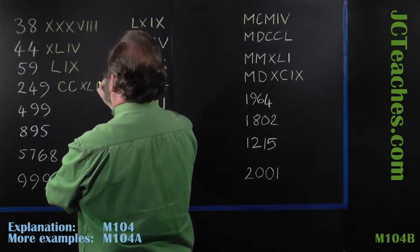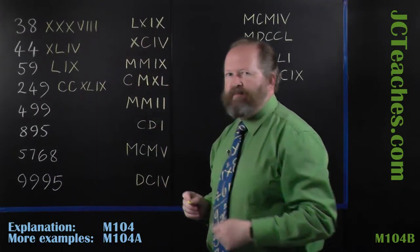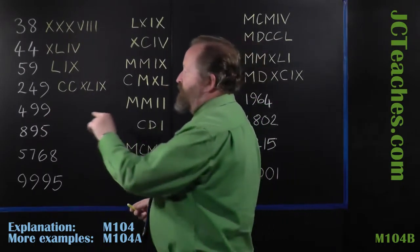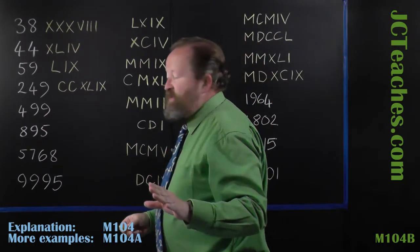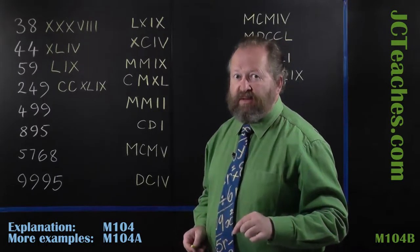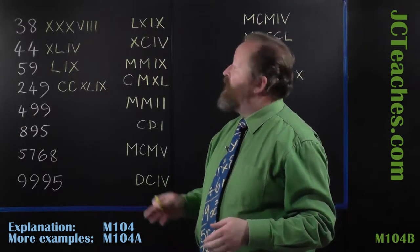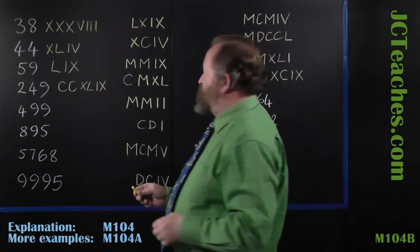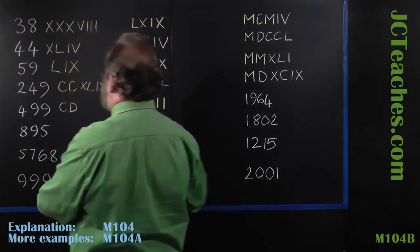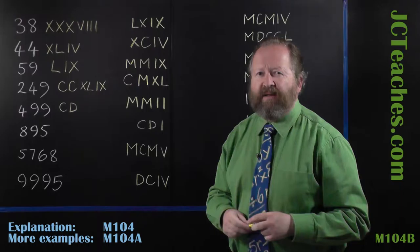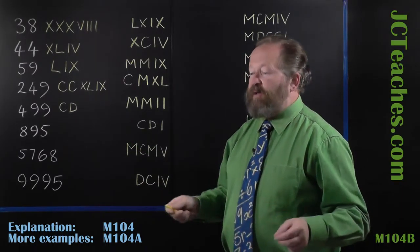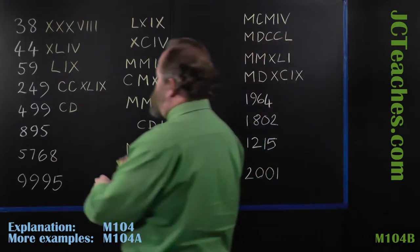499. 400 first of all, that is 100 less than 500, and 500 is D. And 100 is C, so we can have CD for 400. Then we've got to have 99. 90 is 10 less than 100, so we can have XC for 90, then we can have IX for the nine.